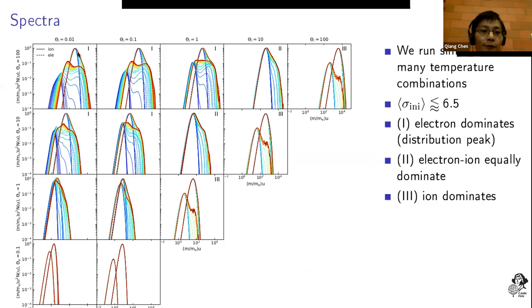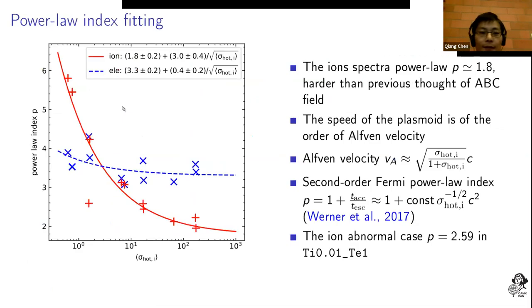We measured the slope for the spectra and fitted them into curves. For the ions it's in red color and you could see that it rises even to around two. This is very hard in the ABC field.